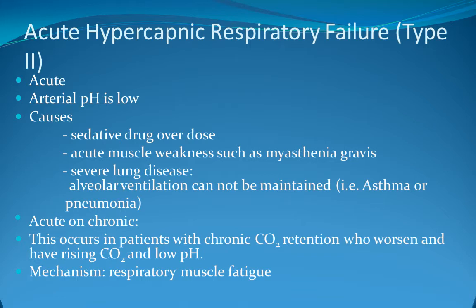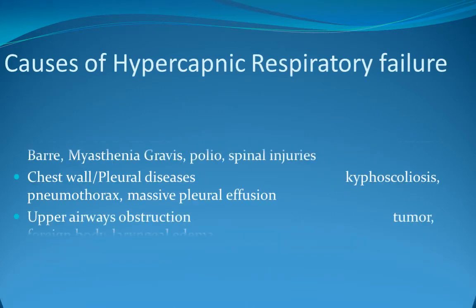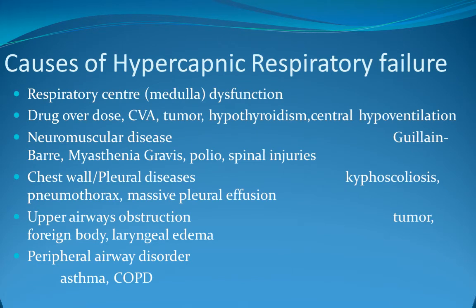Acute-on-chronic type 2 respiratory failure occurs in patients with chronic CO2 retention who worsen with rising CO2 and low pH. Mechanisms include respiratory muscle fatigue as in myasthenia. The lesion can lie in the respiratory center causing medullary dysfunction, drug overdose, CVA, tumors, or hypothyroidism, as well as neuromuscular disease like Guillain-Barré syndrome, chest wall and pleural disease, upper airway obstruction, foreign body, laryngeal edema, and peripheral airway disorder.